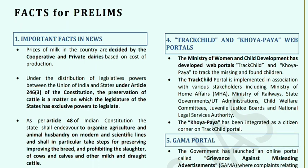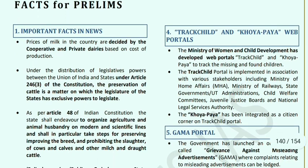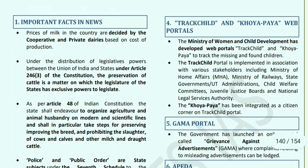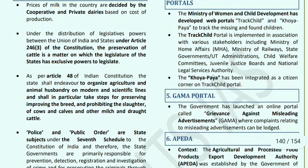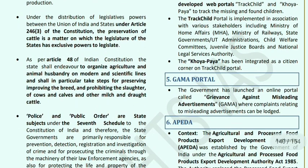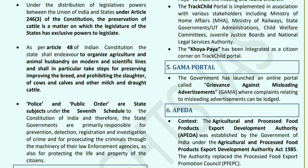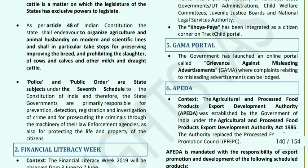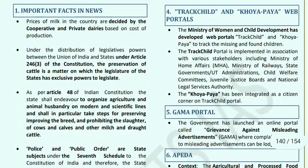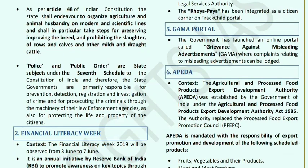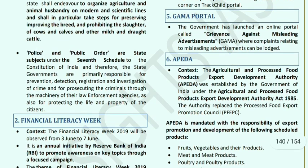Article 48 of the Indian Constitution directs the state to organize agriculture and animal husbandry on modern and scientific lines, preserve and improve breeds, and prohibit slaughter of cows, calves, and other milch and draught cattle. Both cattle and public order/police are state subjects under the Seventh Schedule, making it the state government's responsibility to prevent related crimes.